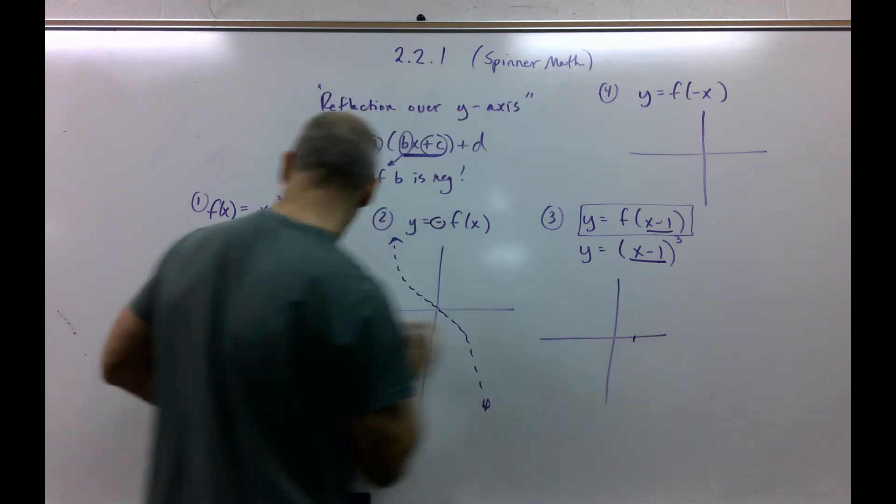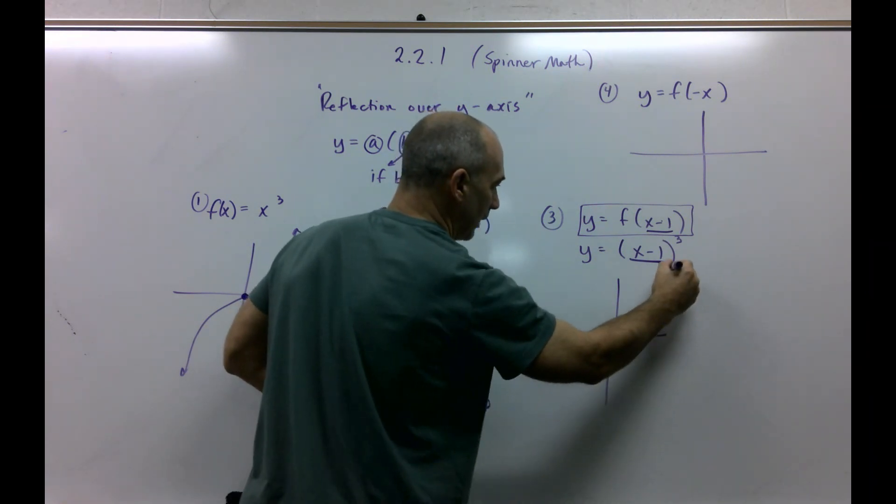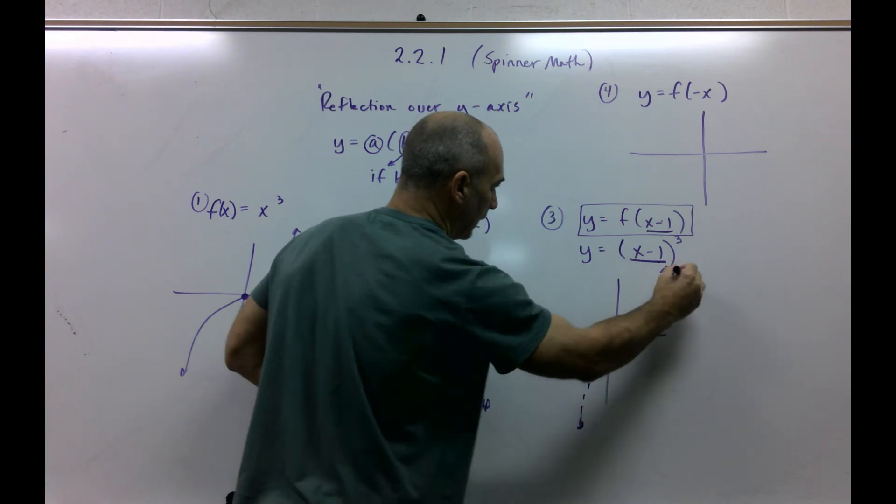So, essentially, see the origin is zero, zero. Now the origin is one, zero. So it's kind of like this. And you just try to duplicate it.